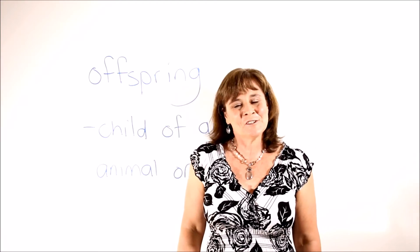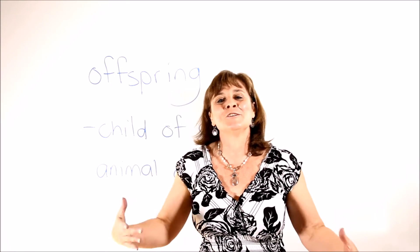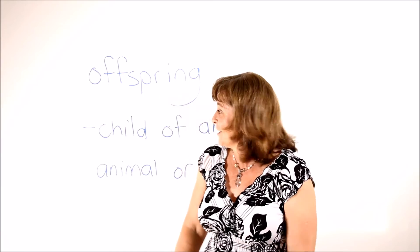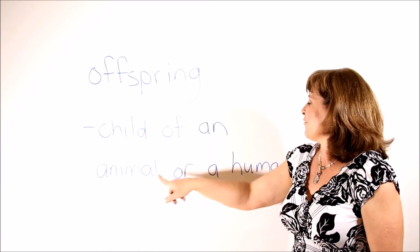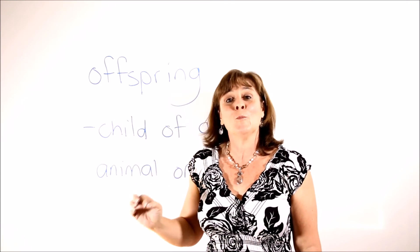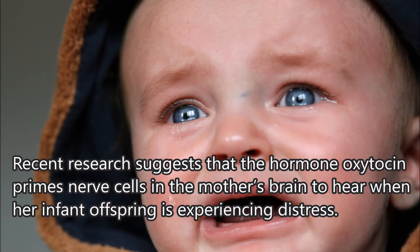I'm sure you have deduced the meaning of the word offspring from the sentences used in the video so far. But just in case you were uncertain, offspring are the children of animals or humans. We can use the word in its singular or plural form. Here is a sample sentence: recent research suggests that the hormone oxytocin primes nerve cells in the mother's brain to hear when her infant offspring is experiencing distress.